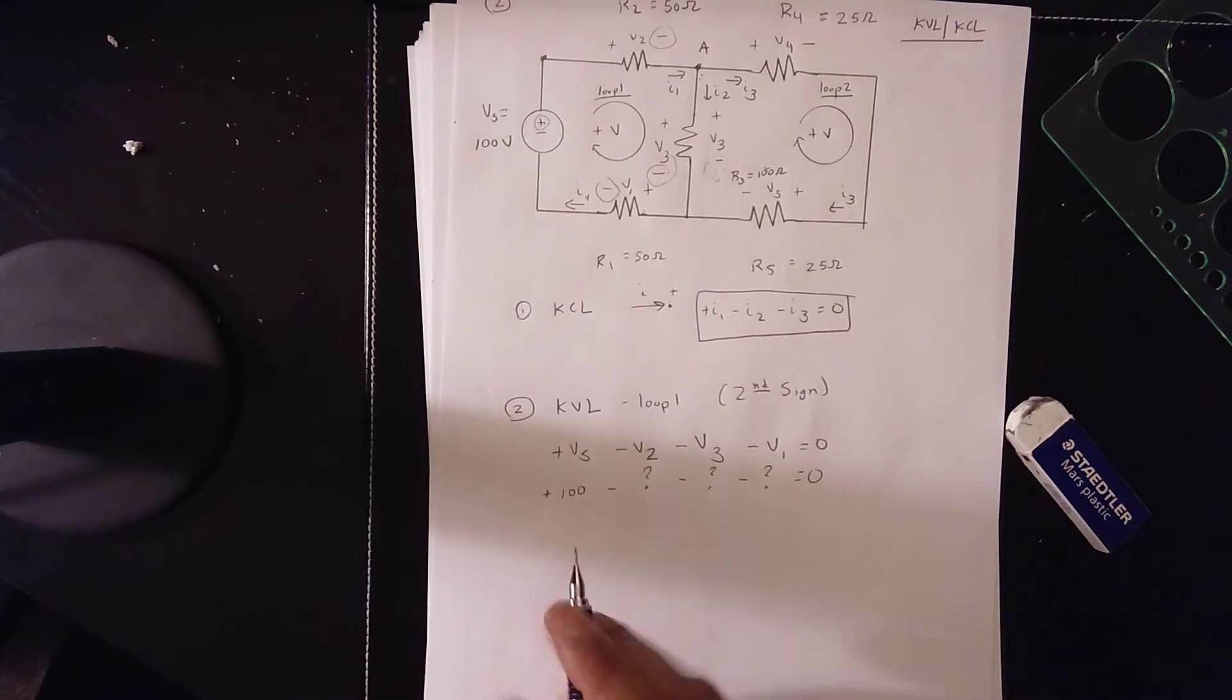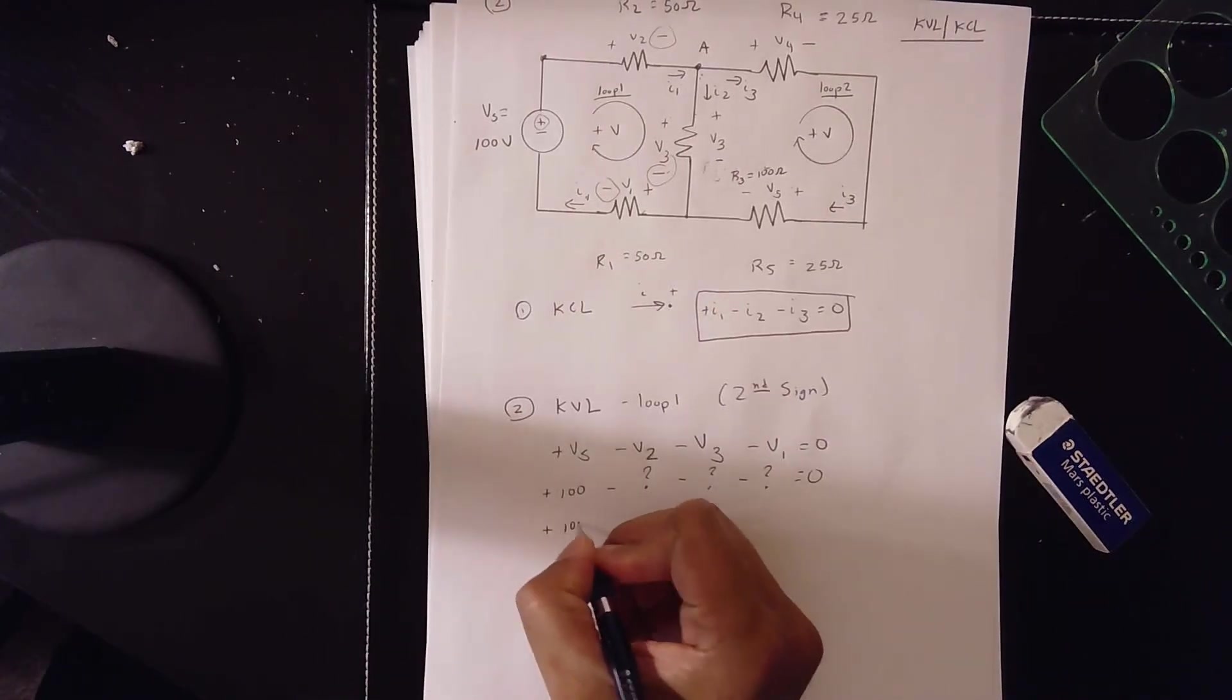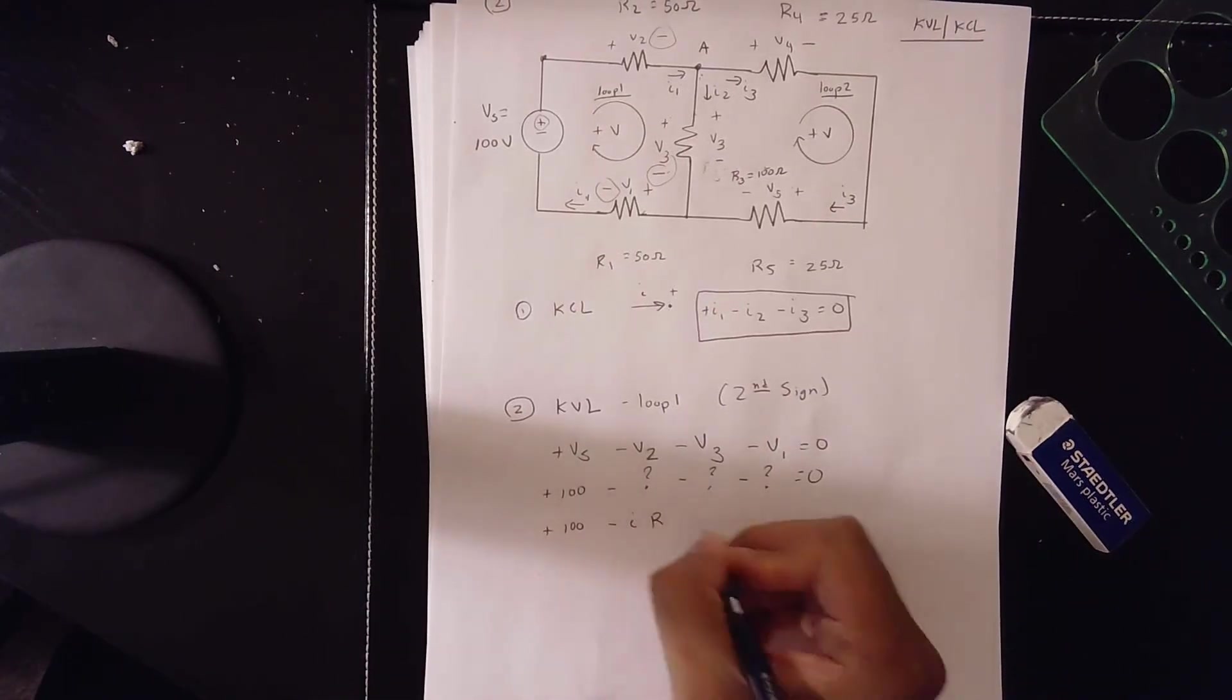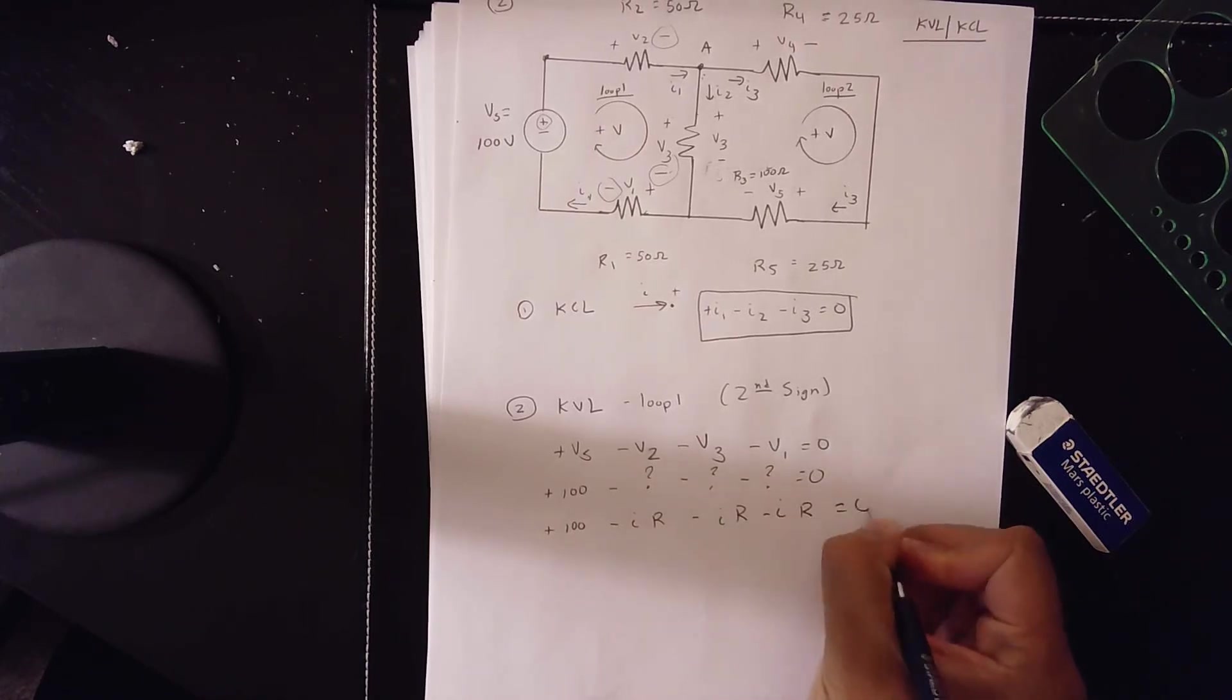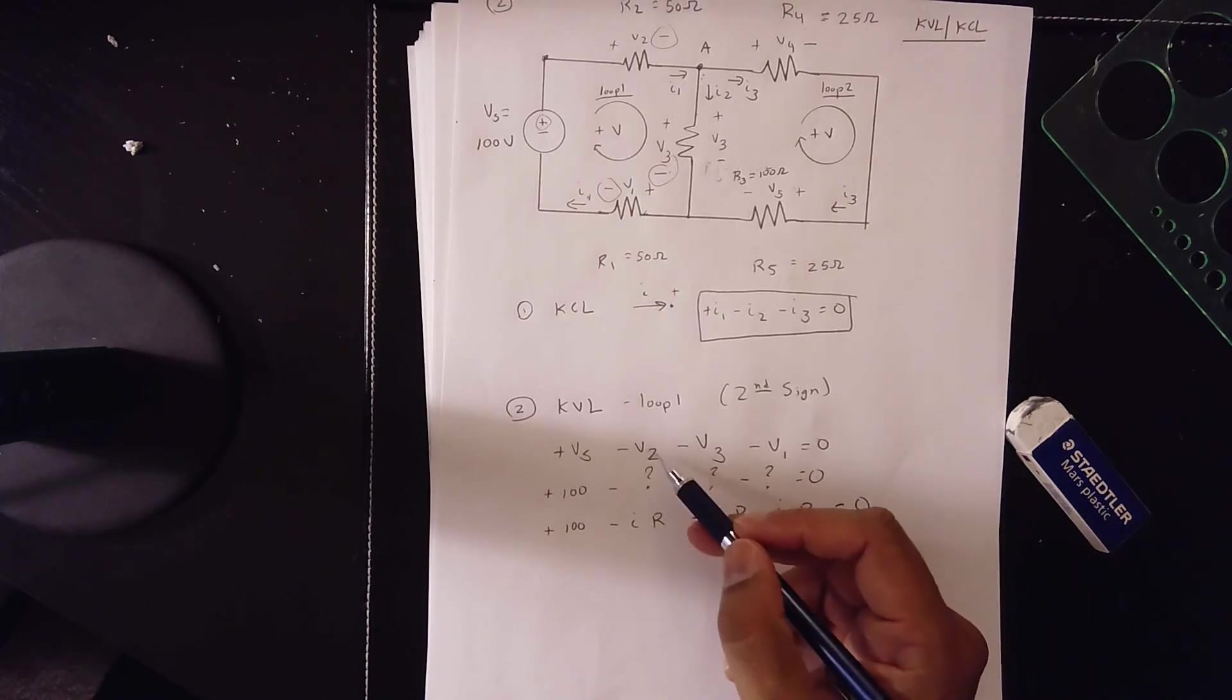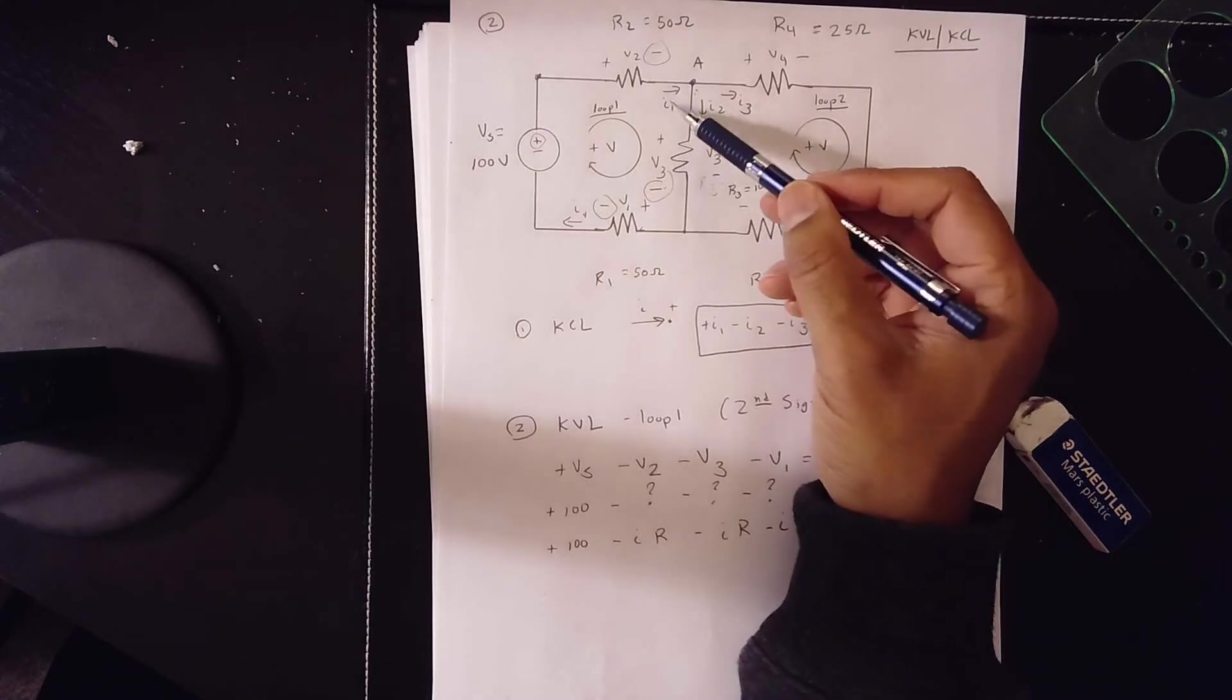So if we don't know what they are, we simply write plus 100 IR. We don't know what that is. It's IR. We don't know what it is. It's IR is equal to 0. Now we fill in the I and the R with respect to V2.